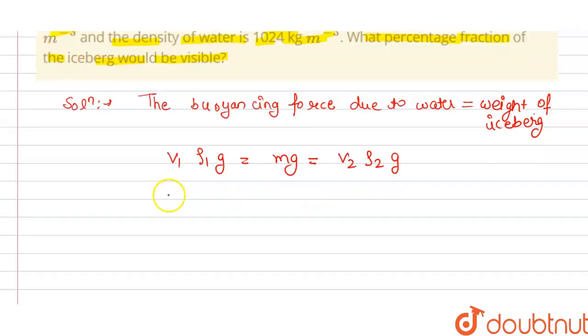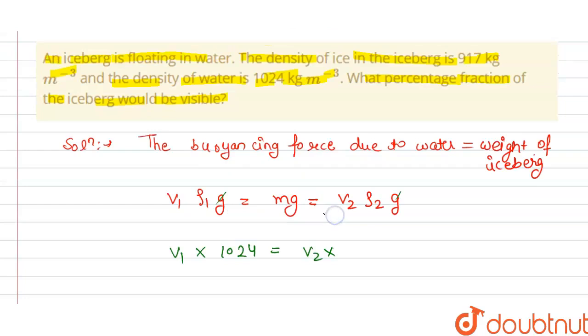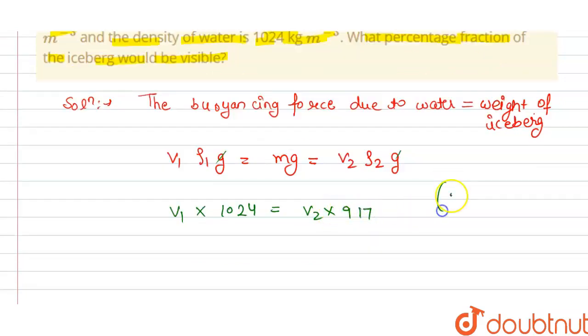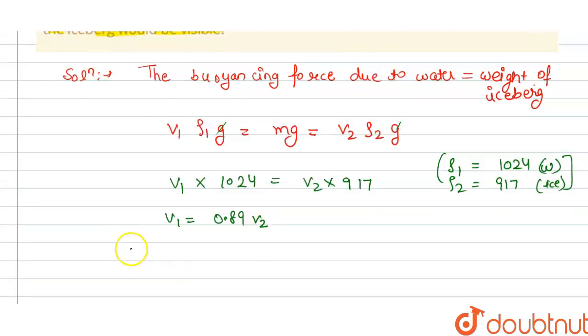From this, g cancels out. So V₁ times 1024 equals V₂ times 917, where ρ₁ = 1024 for water and ρ₂ = 917 for iceberg. From this we get V₁ = 0.89V₂. So the iceberg visible equals: